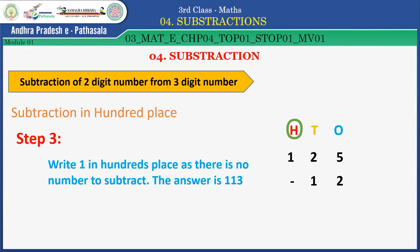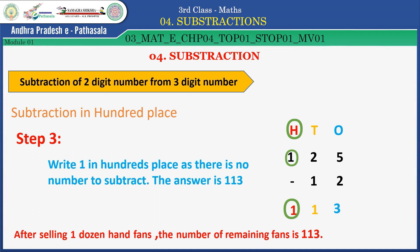Observe, children. How will we get 130? Here the hundreds place value is 1. On the down side there is no number, so we have to write 1 in hundreds place.